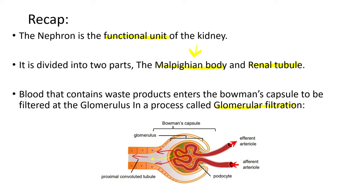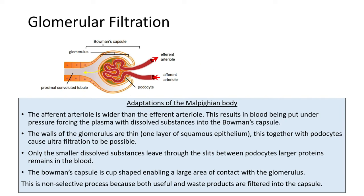In this video, we are going to look step by step at how that happens and what are the adaptations of the Bowman's capsule — what makes ultrafiltration or glomerular filtration possible. Another name for glomerular filtration is ultrafiltration. Whenever you see ultrafiltration and glomerular filtration, they are still referring to the same thing: the filtration of the blood at the glomerulus.